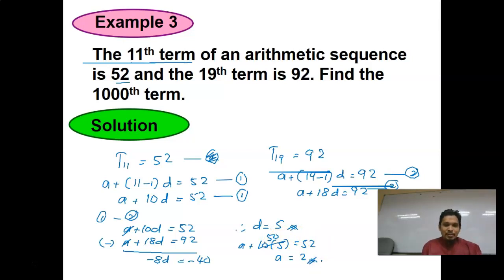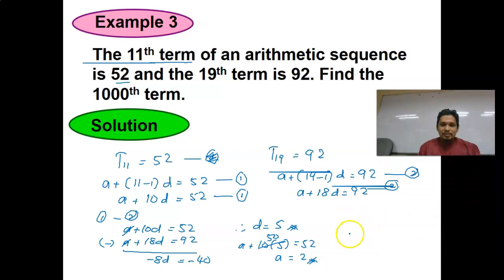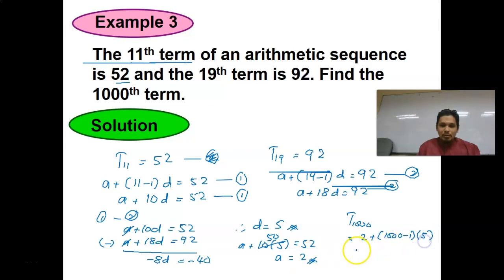Now, what about the 1000th term? T1000 = A + (1000−1)×D = 2 + 999×5 = 4997. There you go.